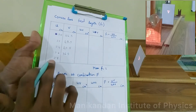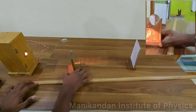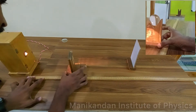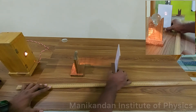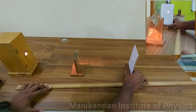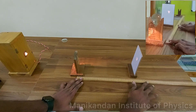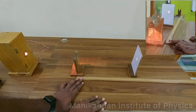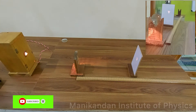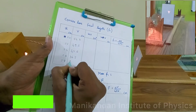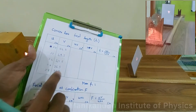Now I am going to increase my object distance to 28 cm, and move my screen slowly away from the lens. The clear image on the screen gives a distance of approximately 33.5 cm. So for u = 28 cm, v = 33.5 cm. Using all these u and v values, we are able to find the focal length of the convex lens.